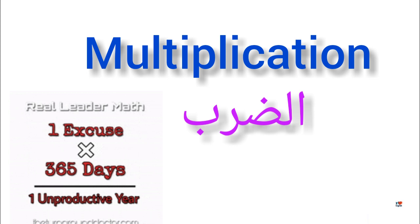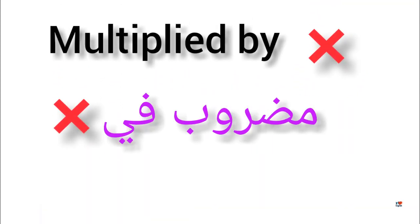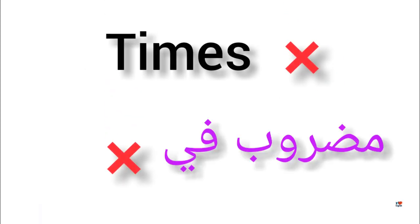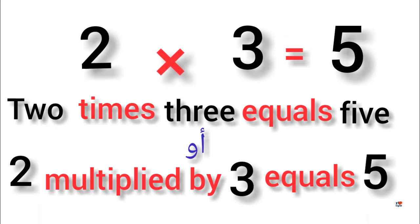Multiplication. Multiplied by. Times. 2 times 3 equals 5. 2 multiplied by 3 equals 5.